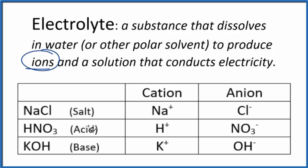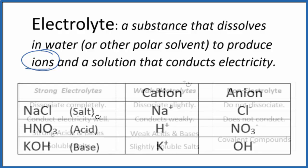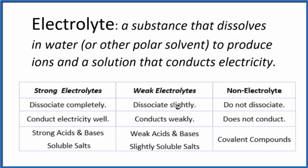Let's classify some electrolytes. Strong electrolytes break apart completely, the solution conducts electricity, and we have lots of ions formed. For weak electrolytes, they dissociate slightly, so the solution doesn't conduct electricity well, but it does conduct. Non-electrolytes don't break apart, don't form ions, so they don't conduct. Really, we're talking about the number of ions formed when we put the substance in water.